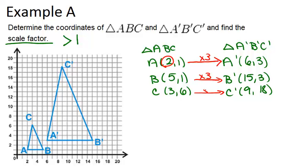And again, it's the same thing for C. 3 times 3 is 9, 6 times 3 is 18. So what that means is that the scale factor is 3.